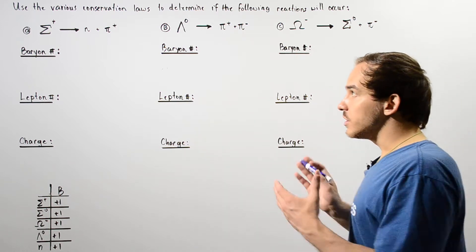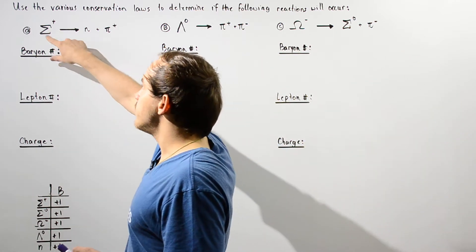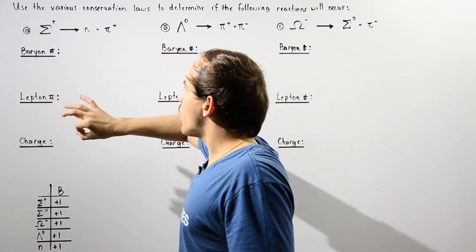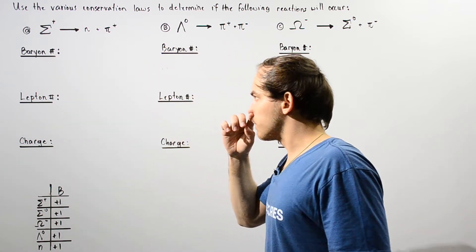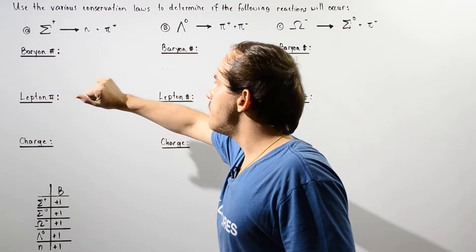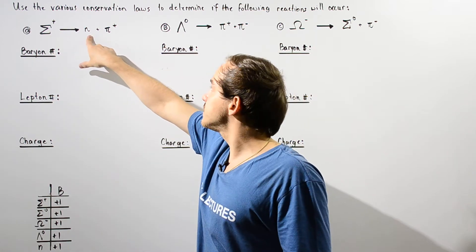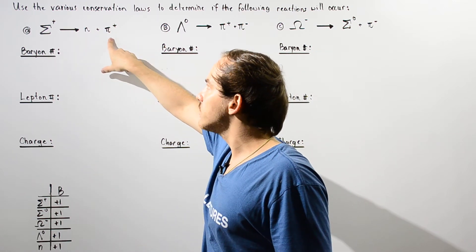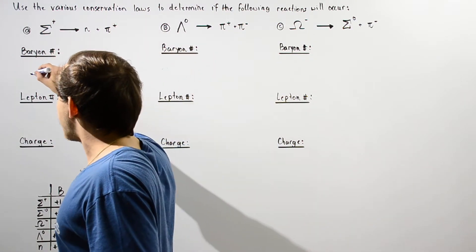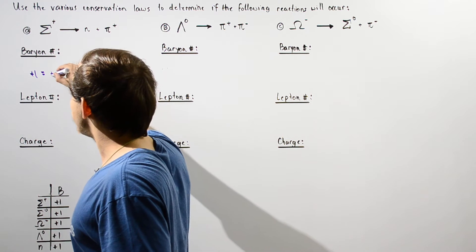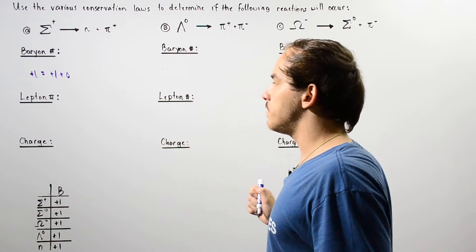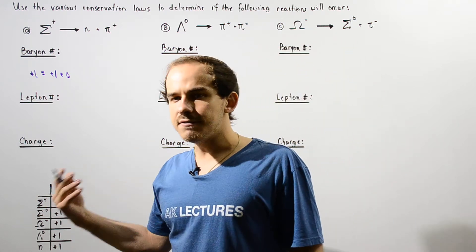In part A, on the left side, we have a sigma. On the right side, we have a neutron as well as a pion. The question is: is the baryon number conserved? The baryon number for the sigma is positive one, and the baryon number for the neutron is also positive one. The pion is not a baryon, so it gets a value of zero. On the left side we have positive one; on the right side we have positive one plus zero. Positive one equals positive one, so the baryon number is conserved.